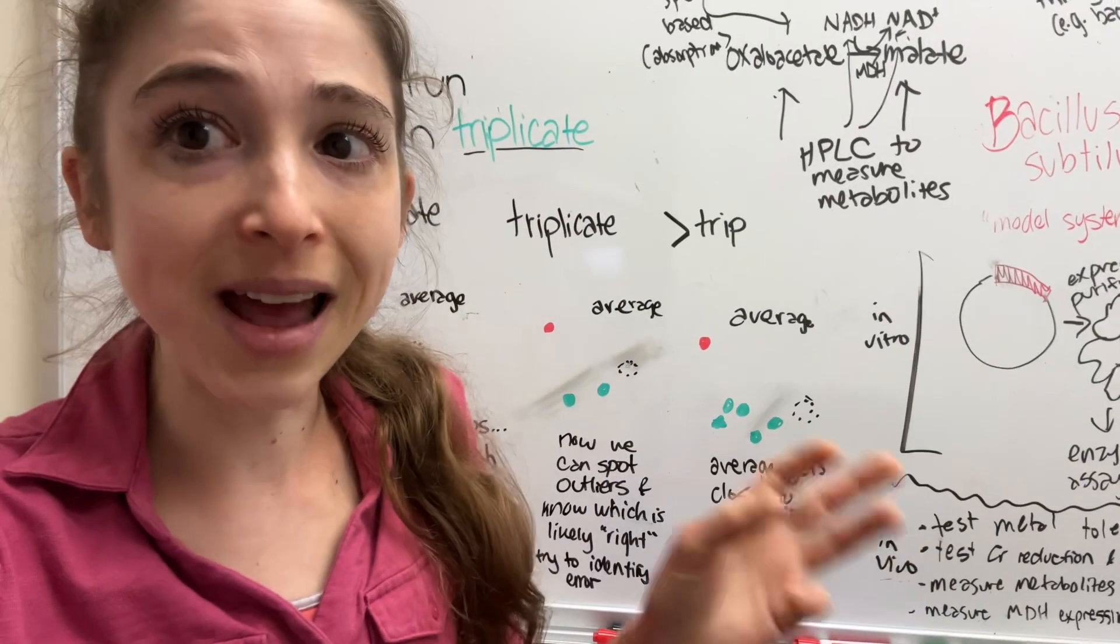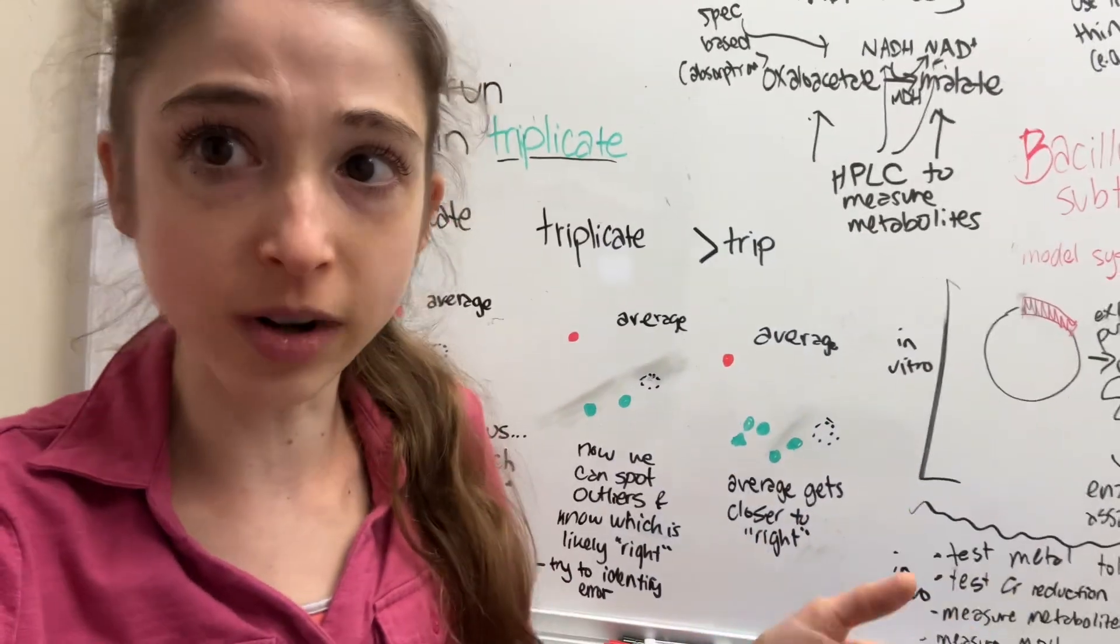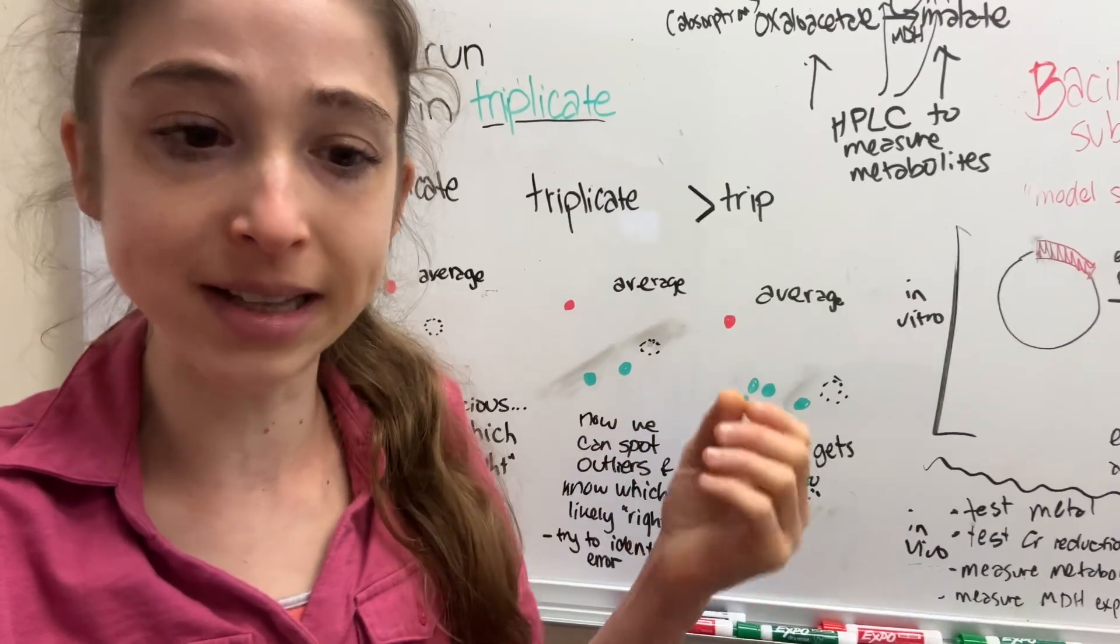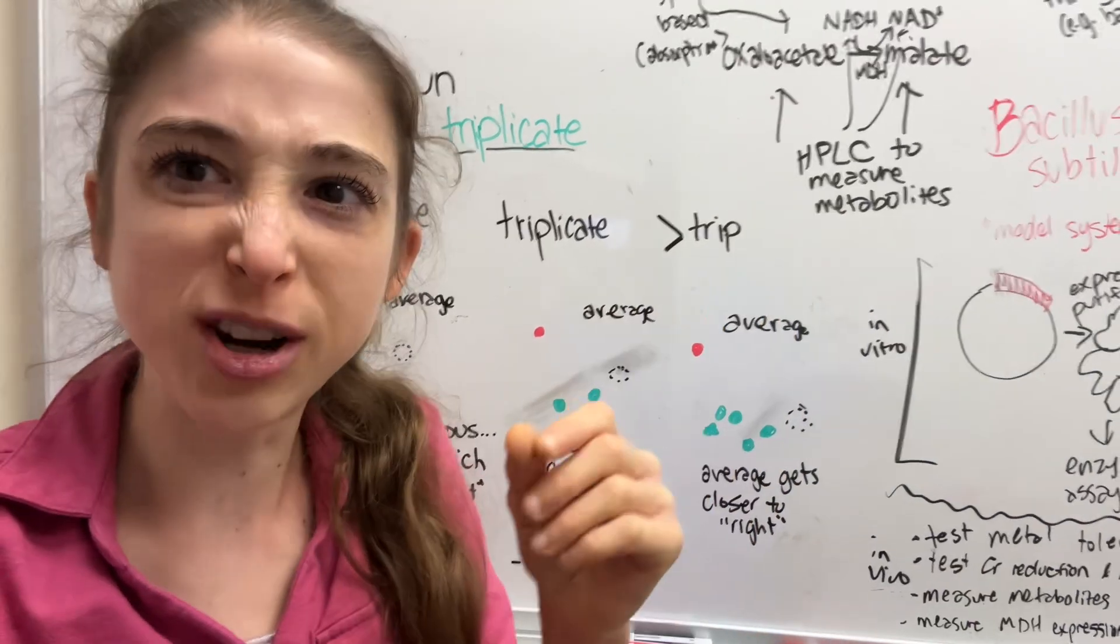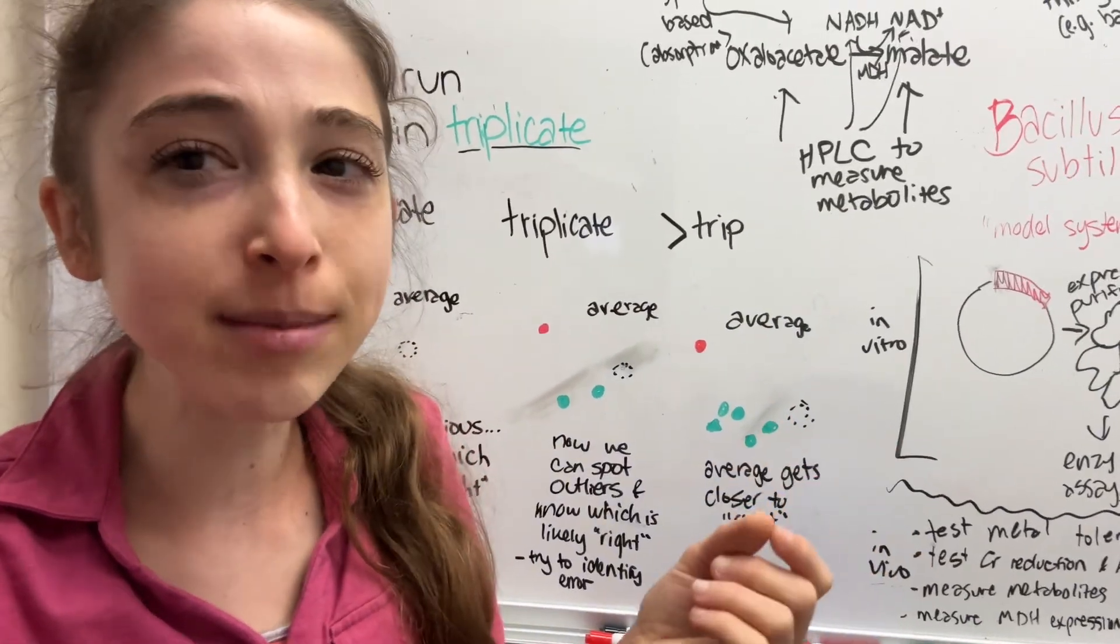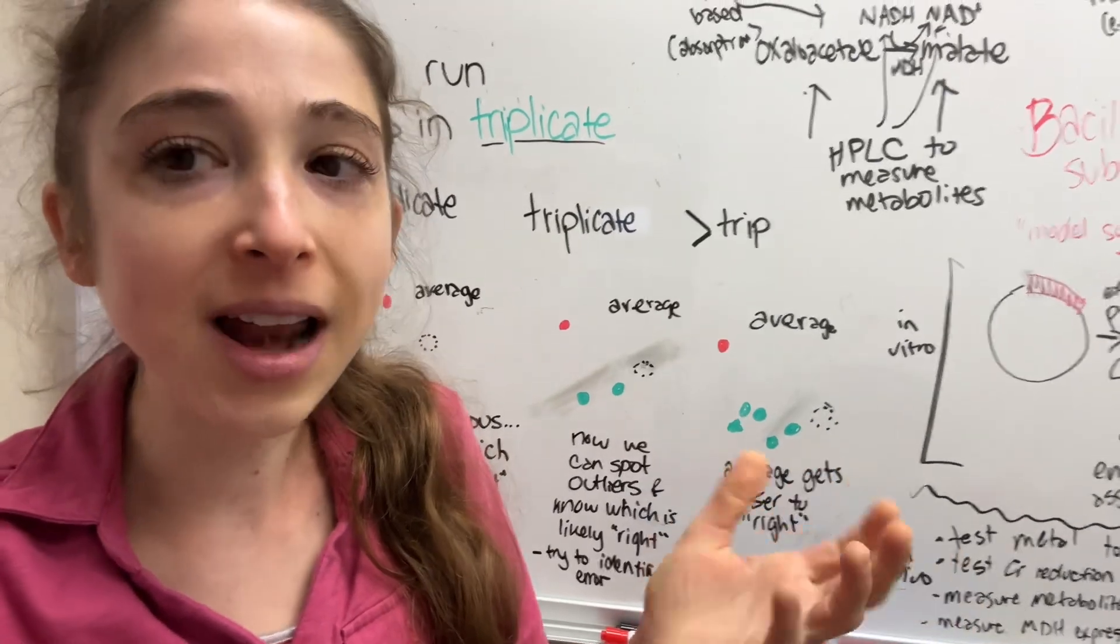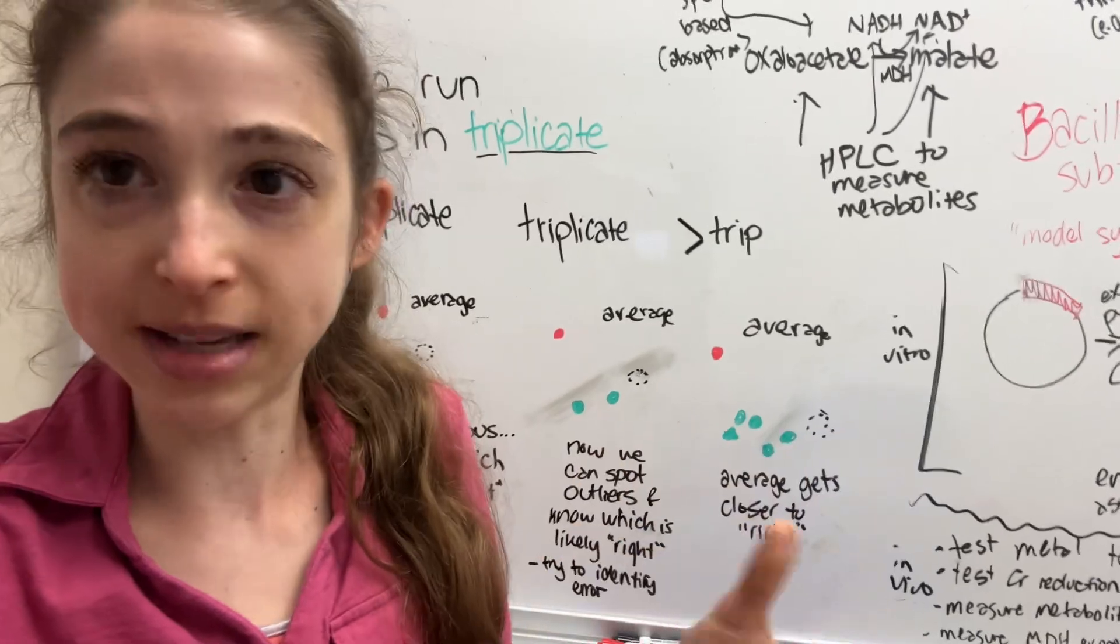Now, all this is assuming that these samples have some independence from one another. And so there are different types of replicates, like biological replicates, where you have different whole samples, and then technical replicates where you're basically measuring the same thing multiple times. If you're doing technical replicates, then what can happen is that you have the same source of error in all of those samples.